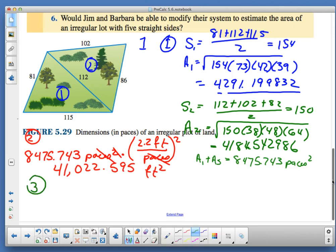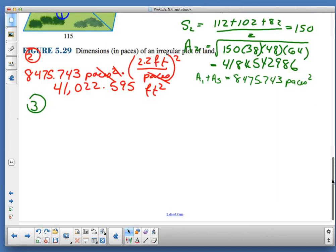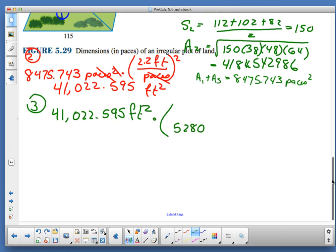In step 3, we are asked: there are 5280 feet in a mile, convert the area to square miles. So again, I'm going to take my 41022.595 feet squared. I'm going to multiply—remember, we just found out there are 5280 feet in one mile, and we're going to square that because I'm looking for getting rid of my squares. So this is going to be 0.00147 miles squared.